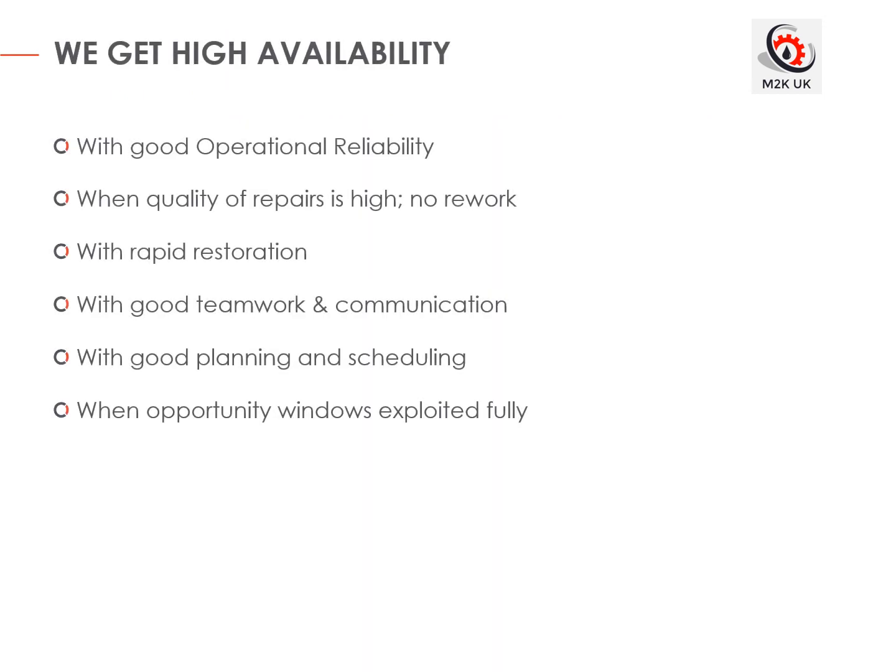Reliability and availability are intrinsically linked. Arithmetically, reliability is the total time minus the unplanned downtime divided by the total time, whereas availability is the total time minus the unplanned plus the planned downtime divided by the total time. As I said earlier, availability is what keeps the lights on, and I'll be talking about the factors that influence availability throughout the course.